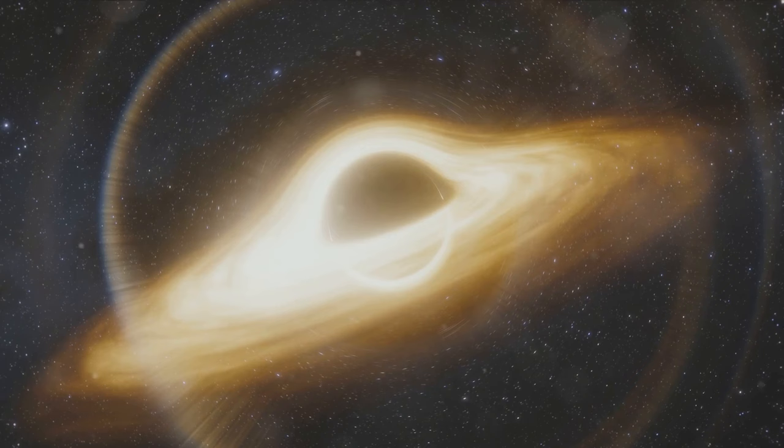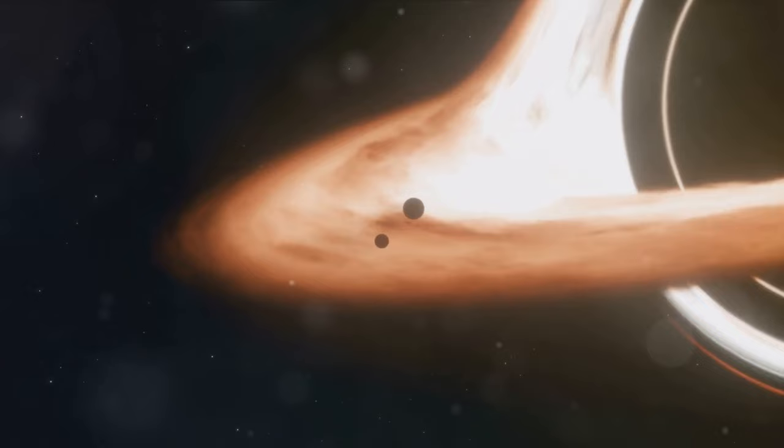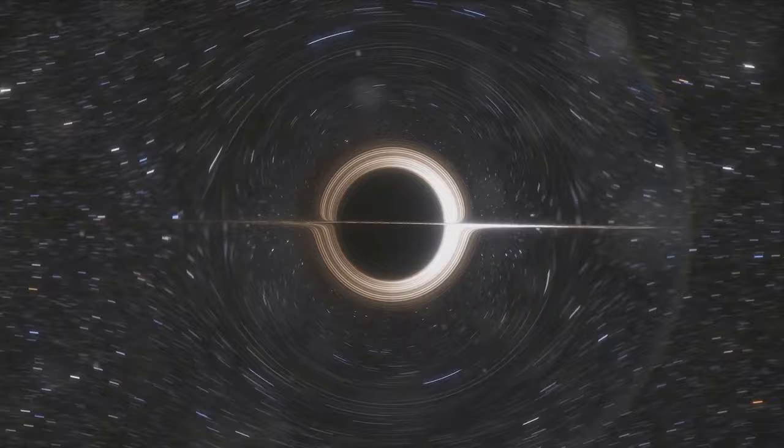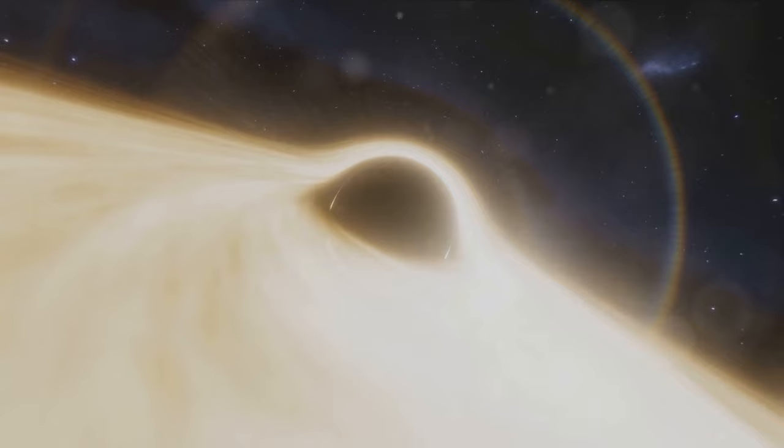Imagine the event horizon as the black hole's mouth, a spherical boundary marking the point of no return. Anything that crosses this threshold, whether it's a spaceship, light, or even a rogue planet, is inexorably drawn towards the black hole's heart, the singularity. The event horizon is a one-way street with one destination only.